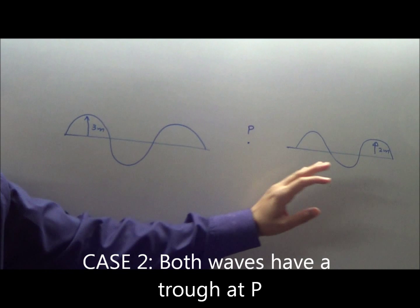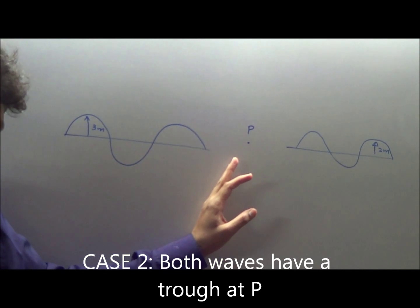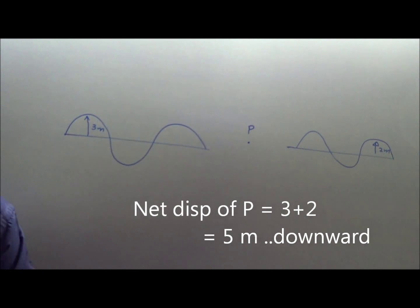Wave 1 has a trough at P, wave 2 has a trough at P. P will be displaced down by 3 plus 2, 5 meters down.